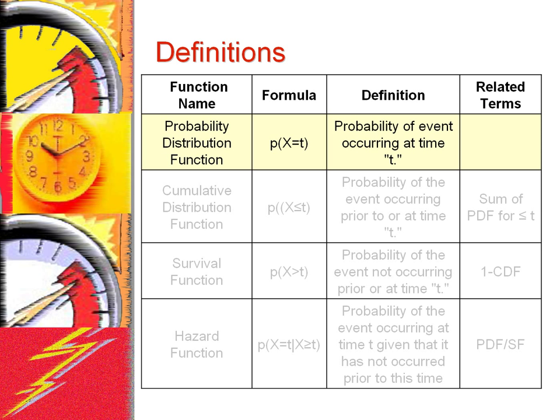A few definitions will be helpful in setting up the method of analysis. To analyze a joint effect of two or more causes, we need a function called the hazard function. Before we do so, we need to define several terms that are used in the calculation of a hazard function.